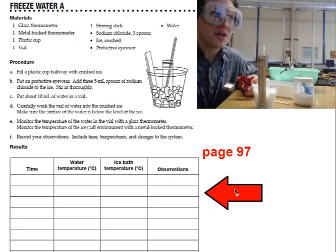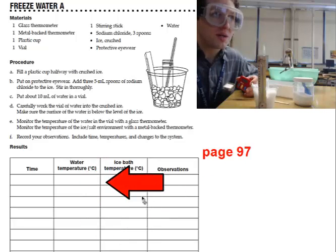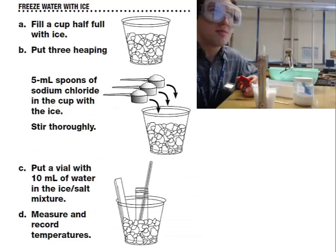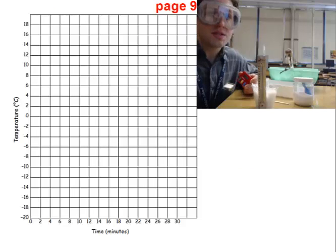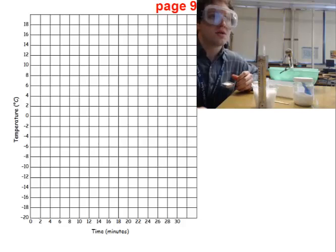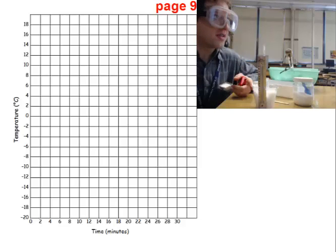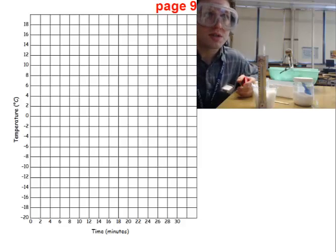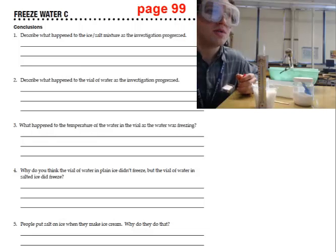After you make your ice and you've recorded all of your data points for water temperature, you can move on to page 98, where you graph the temperature and the time. You're going to need two different markings: one to show the ice bath temperature and one to show the water temperature. If you finish the graph on page 98, move to page 99 and answer the questions.